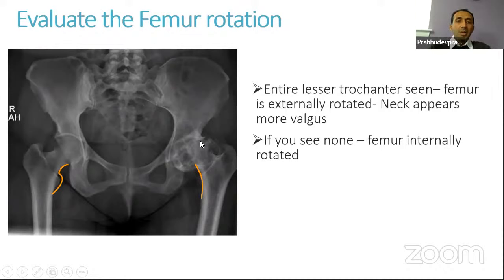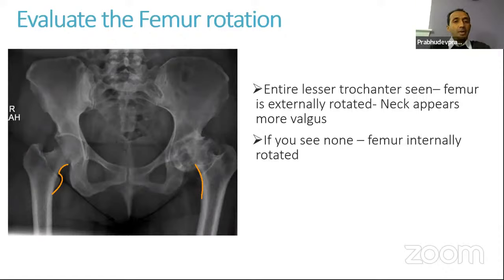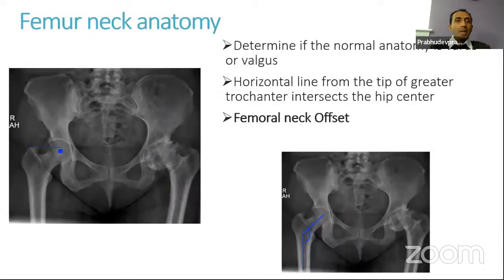This is often difficult because in significant severe osteoarthritis, when there is not much range of motion, it might be very difficult to get a good profile view of the head and neck. In that case, we may have to plan templating on the normal side.